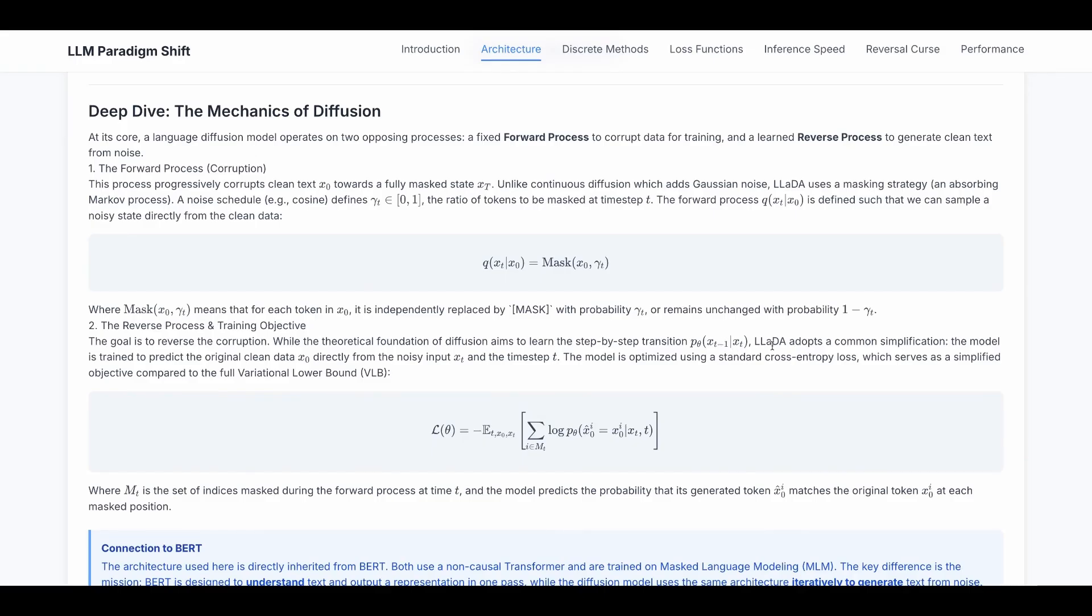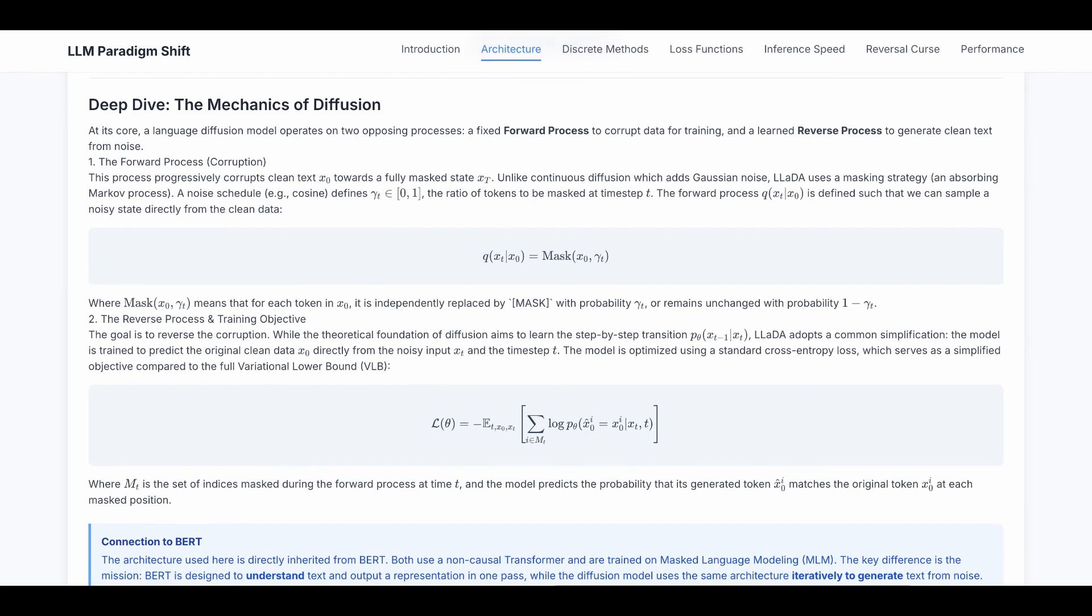Diffusion LM's adopted common simplification. The model is trained to predict the original data x0 directly from the noisy input xt and the time step t. The model is optimized using a standard cross entropy loss, which serves as a simplified objective compared to the full variational lower bound. I've gone through all the details of diffusion in the diffusion deep dive.